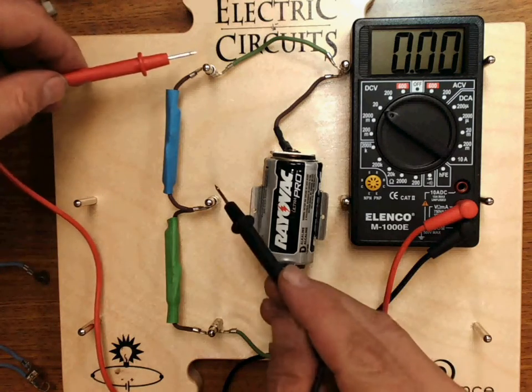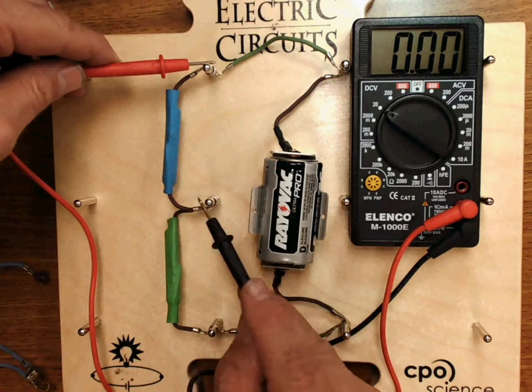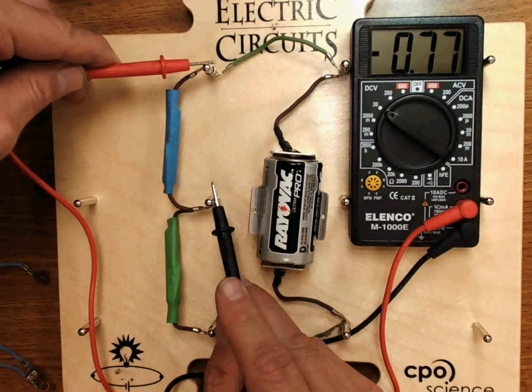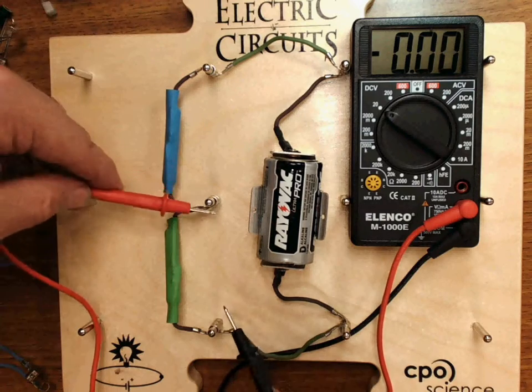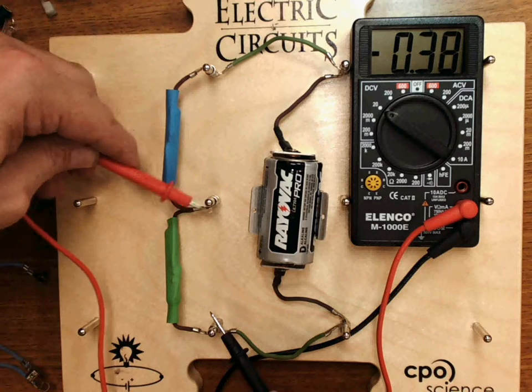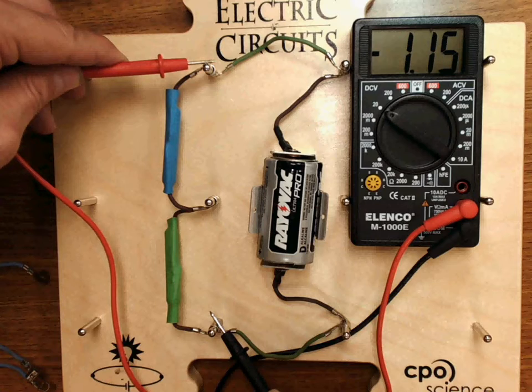To get the voltage across one battery, I measure across from one of these leads to the other. So, the blue is 0.77 volts, and the green is 0.37 volts. Together, those two should add up to the 1.14 volts, plus or minus that last digit.